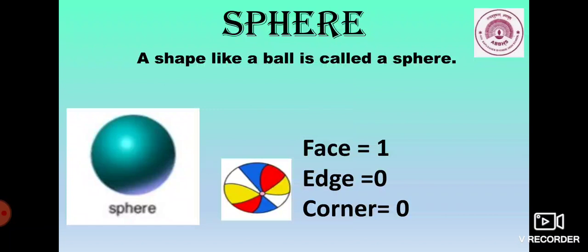This is our favourite shape. Sphere. A shape like a ball is called a sphere. It has 1 face, 0 edges and 0 corners.